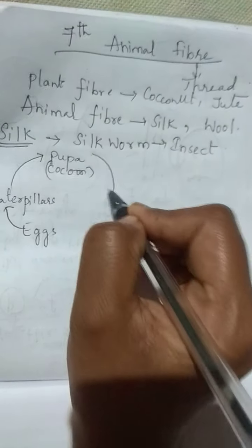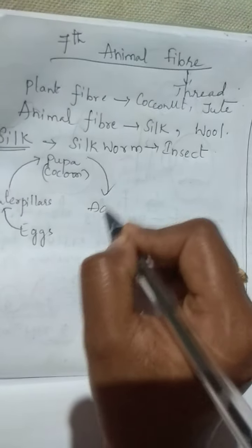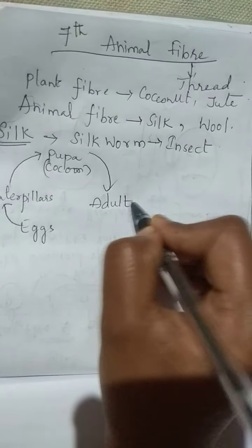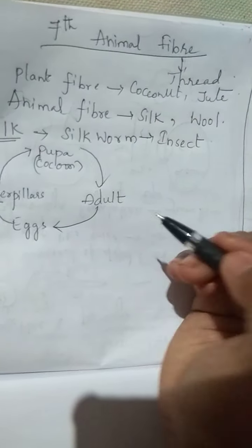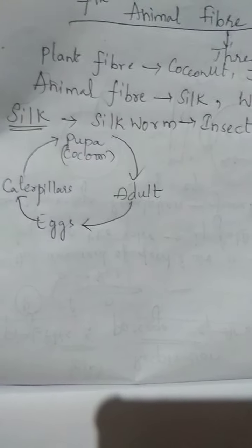From pupa or cocoon comes the adult. Adult means butterfly. And butterfly lays eggs.